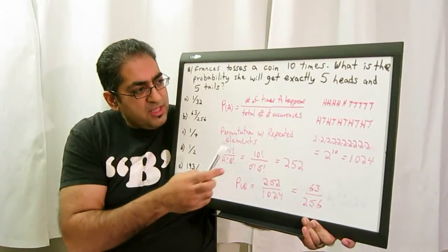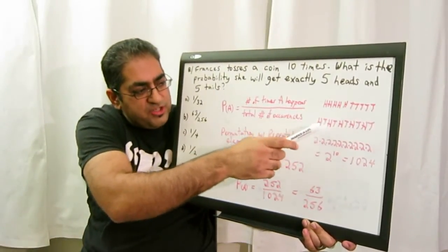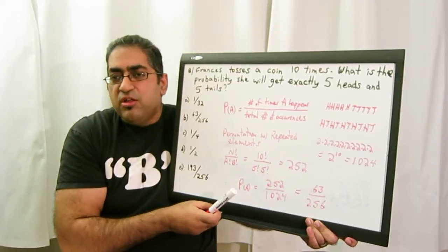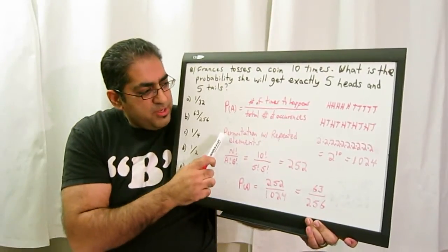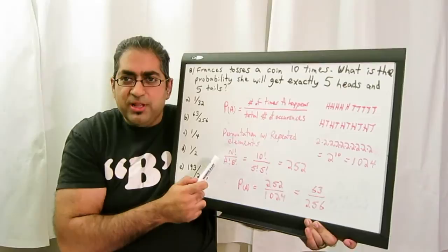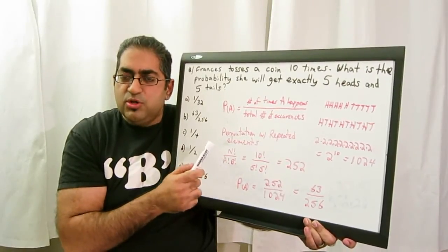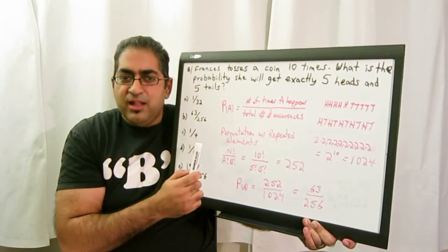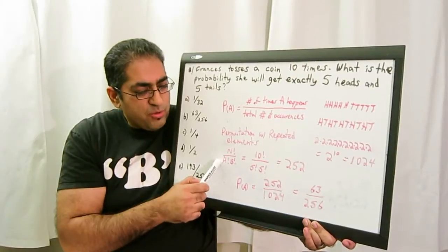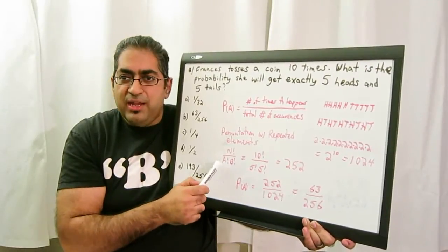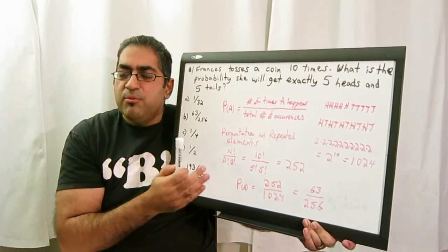The top part is a little bit harder, because how do we calculate the number of configurations? Well, if we use our theory of knowledge for permutations, this is permutations with repeated elements. And the formula is n factorial, which is the total number of elements at play, divided by a factorial and b factorial, where a and b are the number of repeated elements.